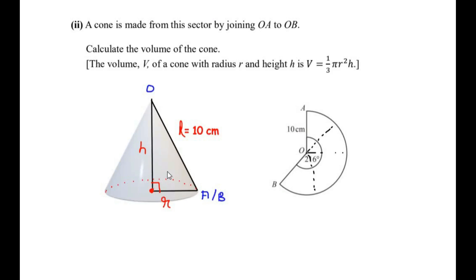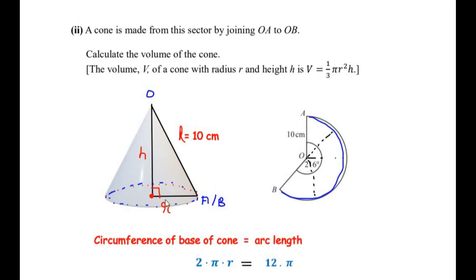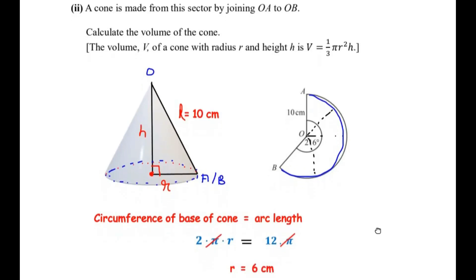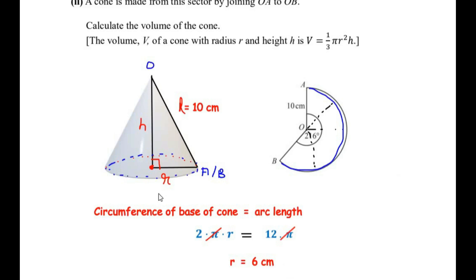When the sector is folded, the arc of the sector becomes the circumference of the base of the cone. So we set the circumference of the base equal to the arc length: 2πr = 12π. The π terms cancel from both sides, and dividing by 2 gives r = 6 centimeters. So the radius of the cone is 6 centimeters.